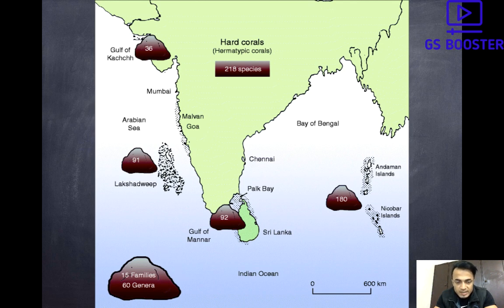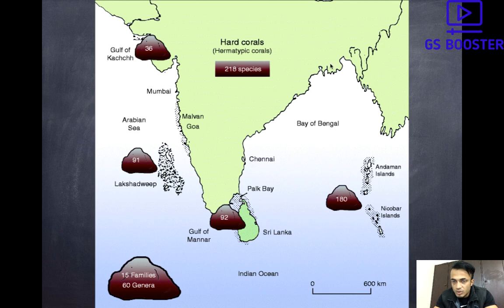The corals found in Lakshadweep are mainly atolls — we will look at the types of corals in the upcoming slides. Coral reefs are not found in Sundarbans because corals grow in high salinity areas. In Sundarbans, both the Ganga and Brahmaputra rivers have their mouths, so there is a lot of fresh water in that region. This makes it not suitable for the growth of coral reefs, and that is why coral reefs are not found in Sundarbans.